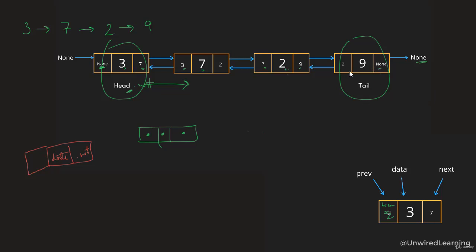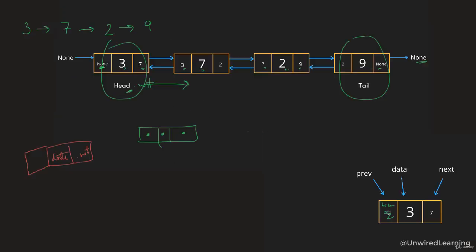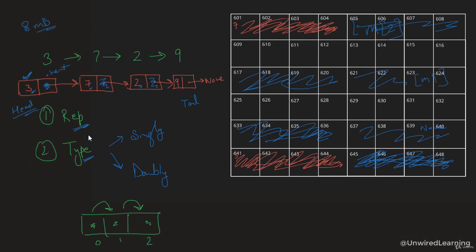In a doubly linked list, we can flow from both left to right and right to left. In a singly linked list, if you reach node 7, you cannot go back to 3, because you don't have that information. But in a doubly linked list, if you are at node 2, you know the previous element is 7, so you can go back. If you are at 7, you can go to 2 or go back to 3. So you have bidirectional traversal — left to right as well as right to left.